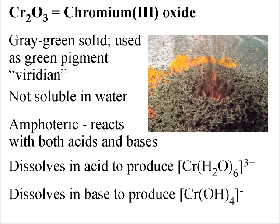Another common chromium(III) compound is chromium(III) oxide, Cr₂O₃. This is a gray-green solid that has been used as a green pigment called viridian. It is not soluble in water, but it is amphoteric, meaning it will react with both acids and bases. Chromium(III) oxide dissolves in acid to produce the hexaaqua ion and dissolves in base to produce the tetrahydroxy ion.